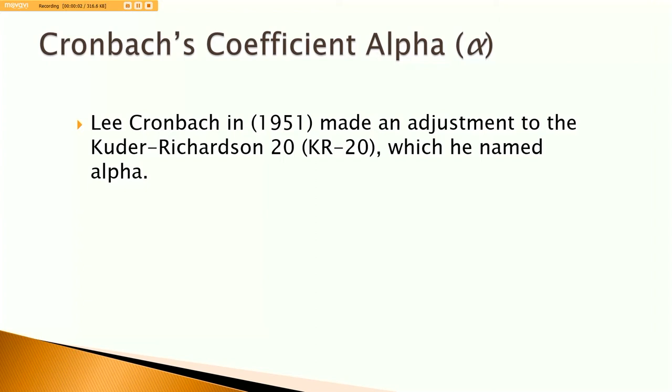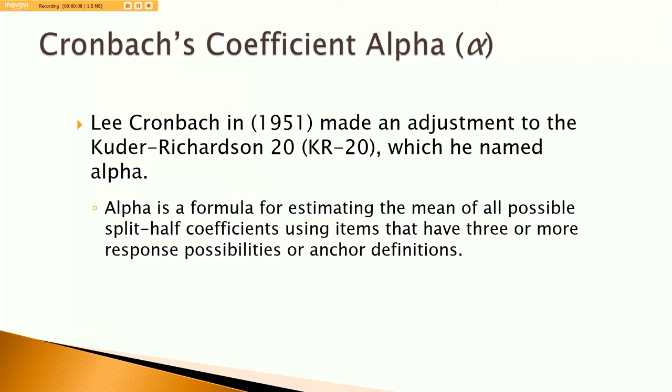What Lee Cronbach did was make an adjustment to the KR-20, which he originally named Alpha. Alpha extends the KR-20 because it's the same idea where it's the mean of all possible split half combinations. But for items that have three or more response options or anchor definitions. So you could have a scale that would be yes, maybe or no. It could be that widely used five point scale from strongly disagree to strongly agree. So it extends the utility of the KR-20 to scales that have three or more response options.